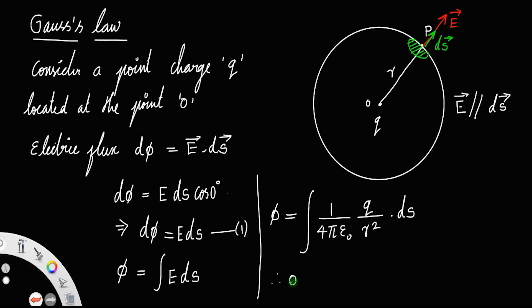Therefore, φ equals... since 1 by 4π ε₀ is a constant, you can take that out. Also, the charge q remains constant and for a sphere the radius remains constant. So you can take this whole term out: 1 by 4π ε₀, q divided by R square, integral ds.